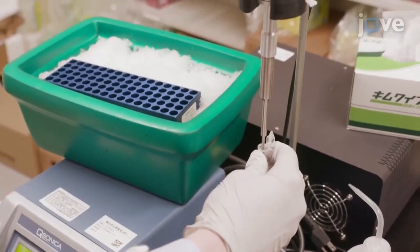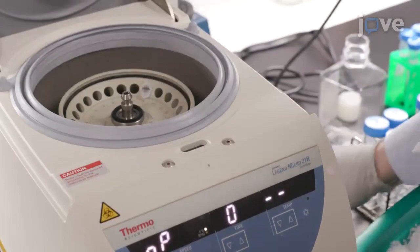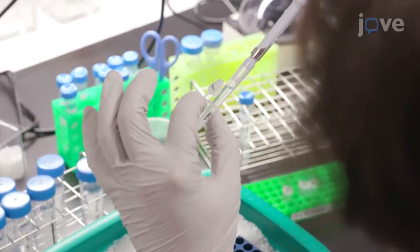Sonicate the sample in a 1.5 milliliter tube at a sonicator amplification of 25% for 10 seconds. Following sonication, centrifuge the sample at 20,400 times gravity for 15 minutes at 4 degrees Celsius.